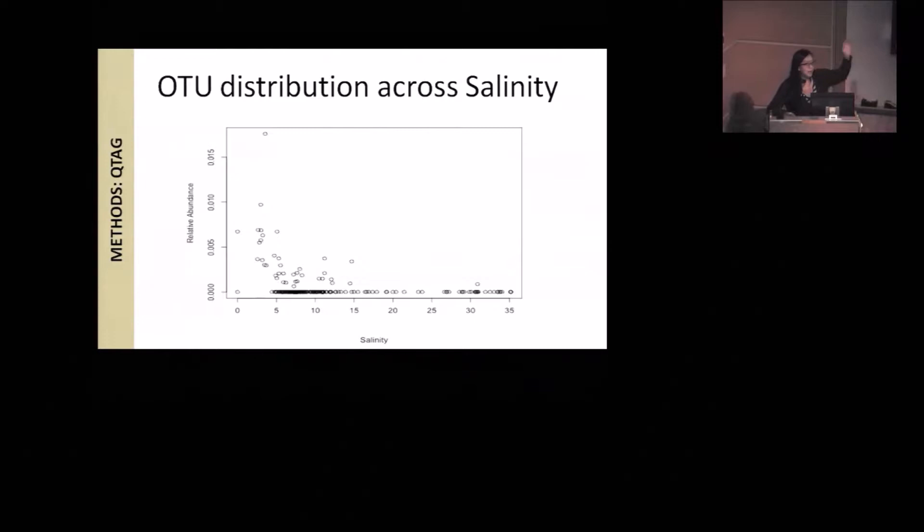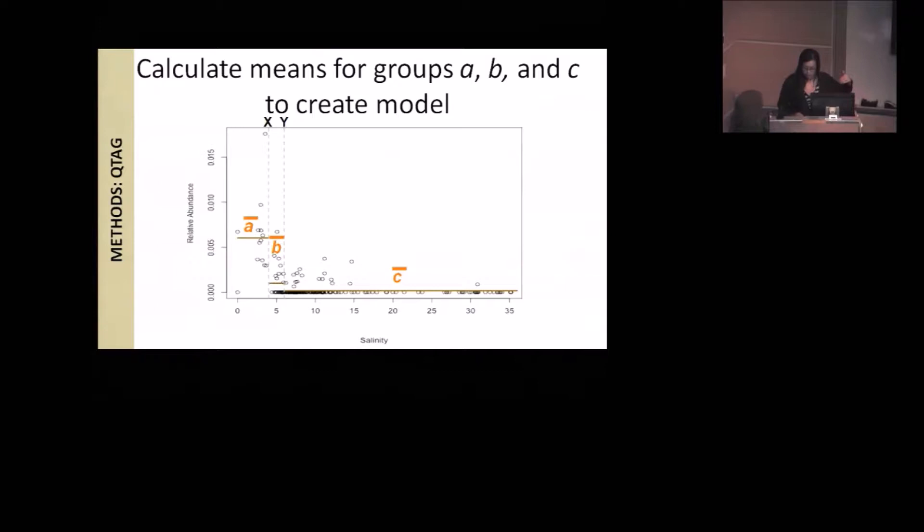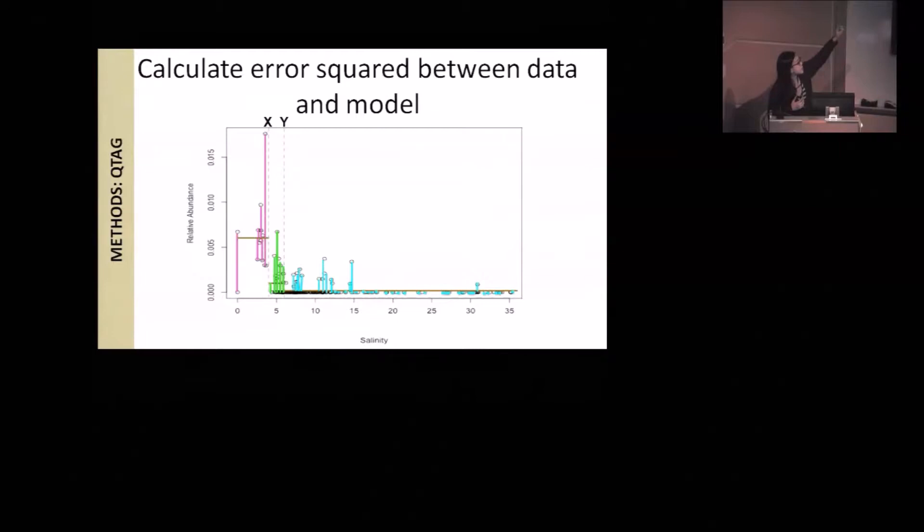The y-axis being the relative abundance of that OTU in the community. So intuitively, this is a freshwater taxa, right? But unfortunately, when you look at data from microbial data sets, there are hundreds to thousands of different OTUs and even a single sample with millions of cells per milliliter of water. So it's really hard to manually and subjectively characterize all of these different taxa as to what kind of specialist they are. What QTAG does is it takes X and Y and iterates through all combinations of X and Y along the salinity gradient. What X and Y do is split the data into three bins, A, B, and C. With these bins, it calculates the mean of each bin of all the data points in that group. Then it calculates the error squared between the data and that three-piecewise model.